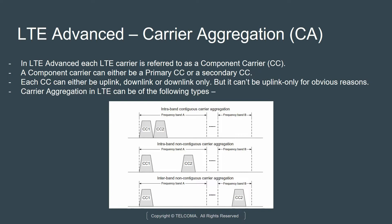There cannot be an uplink-only component carrier, because all your resource allocations happen on the downlink. So you can't have an uplink-only CA. Carrier aggregation can be of multiple types — actually three categories.